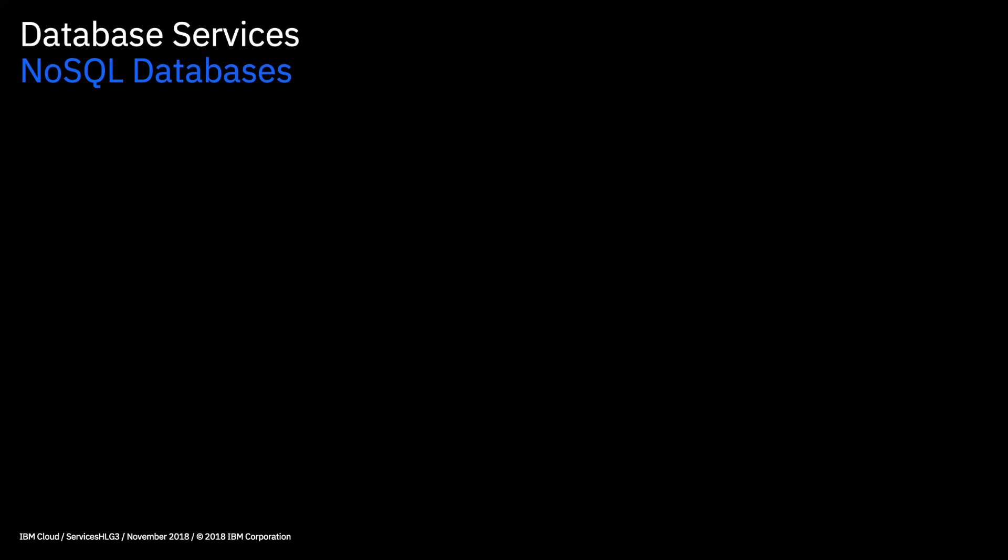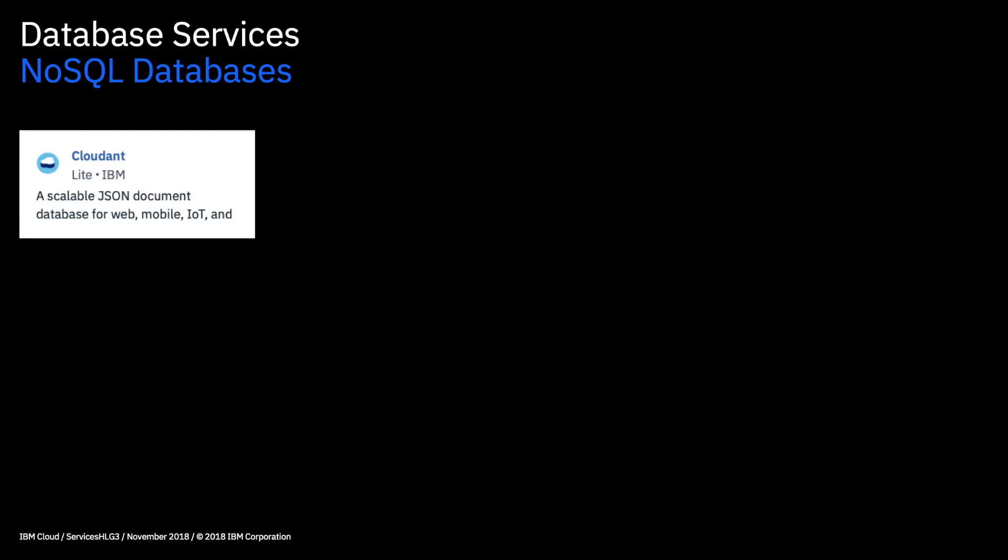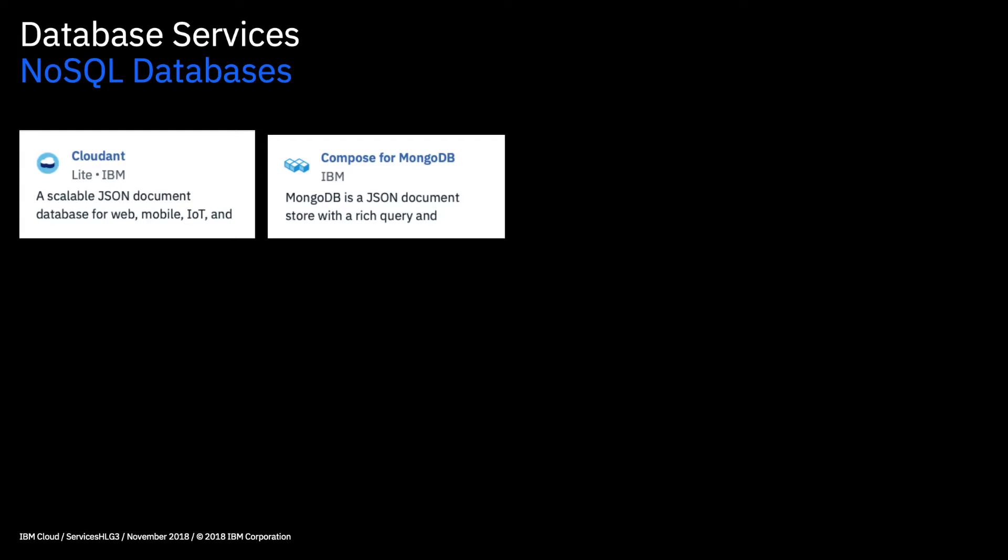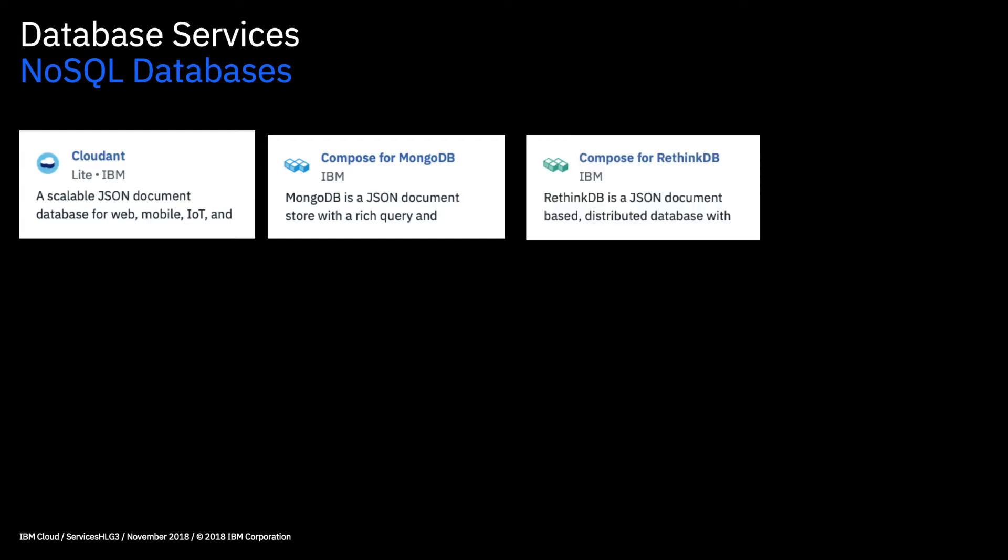Moving on, we have NoSQL databases — also sometimes called document stores — as they store data in documents which are typically in JSON format. The advantage is that there's no hard and fast data structure for developers to worry about, but these are also really fast and powerful databases. Our offerings here are Cloudant, which is very similar to MongoDB if you're familiar with that, then we have Compose for MongoDB, and lastly Compose for RethinkDB.